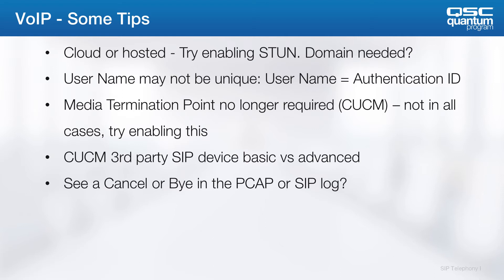In Cisco Call Manager, there are actually two different ways that you can set up a third-party SIP device: Basic and Advanced. With Basic, you're only enabling one extension. So if you're using multiple soft phones within a single core, you would have to use Advanced, which allows up to eight soft phones. If you need more than eight, you would actually use a SIP trunk, which allows for unlimited soft phones.